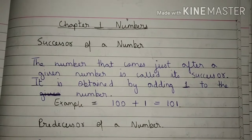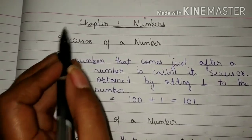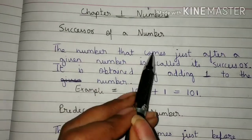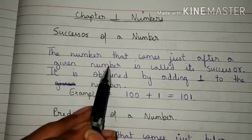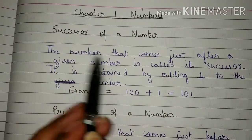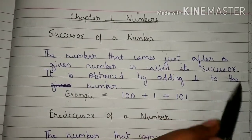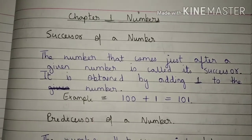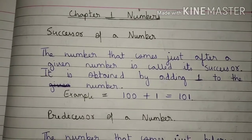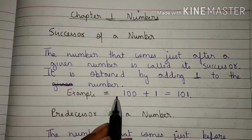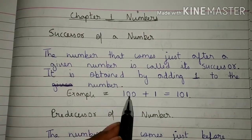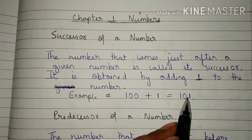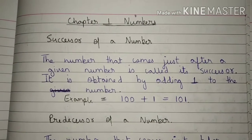Here is the definition of successor and predecessor. What is the successor? The number that comes just after a given number is called its successor. It is obtained by adding 1 to the number. For example, if a number is 100, the number that comes just after 100 is 101, so 101 is called the successor of 100.